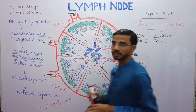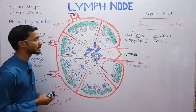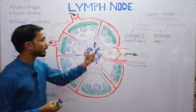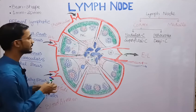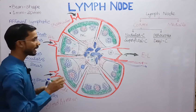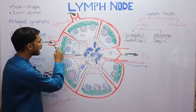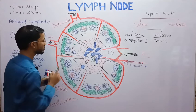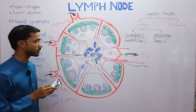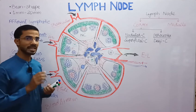Now we will see what components are present in the cortex and medulla. The cortex is divided into two regions: nodular and paracortex. In the nodular region there are several nodules — primary nodules and secondary nodules.